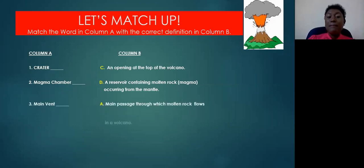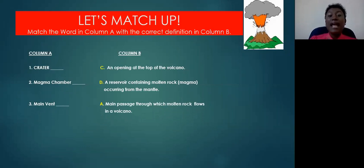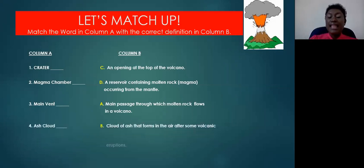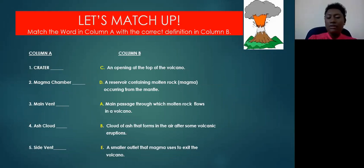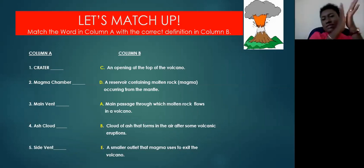The main vent — the answer was A — the main passage through which molten rock flows in a volcano. It's the central passage that allows molten rock to flow up through the volcano. The ash cloud — everybody got that correct — it is a cloud of ash that forms in the air after the volcanic eruption. And the side vent — smaller outlets — it is a small outlet that magma uses to escape through the sides. Awesome job, everyone.